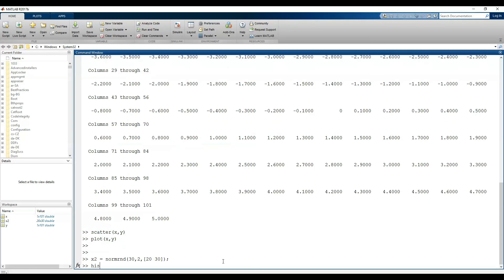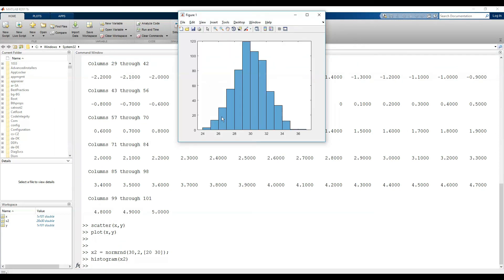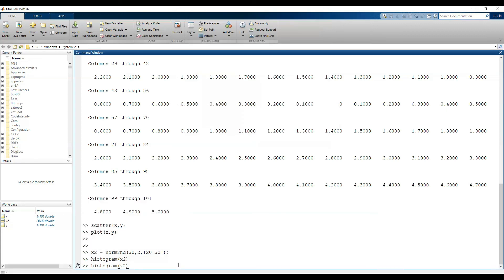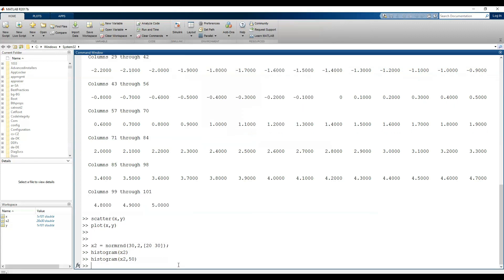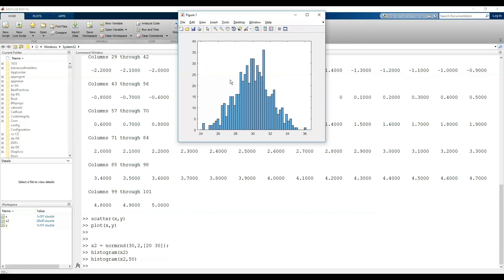If you look at the histogram of created data, it's perfectly similar to ring bell which is the shape of normal distribution. You can also increase the number of bins in the histogram function to see a better shape.